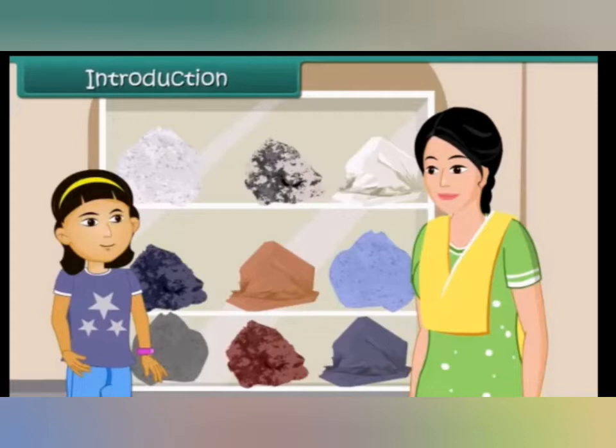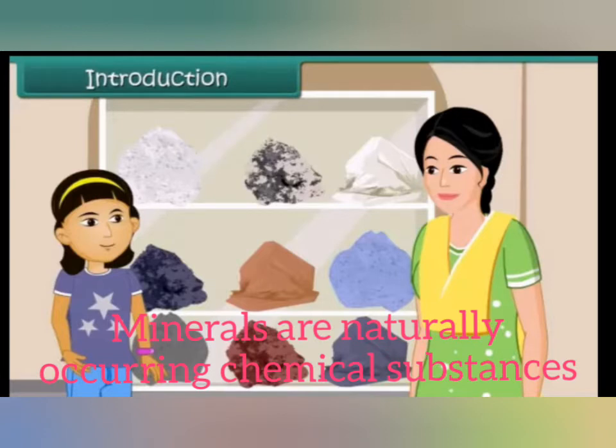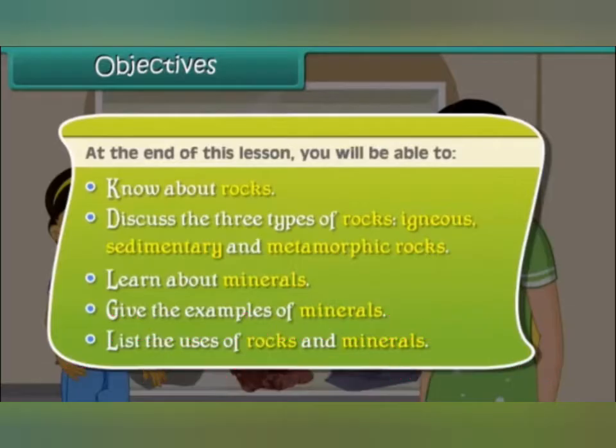Now what are these minerals? Minerals are naturally occurring chemical substances. Let us see the objectives of the lesson. At the end of the lesson you will be able to know about rocks. We are going to discuss about the three types of rocks — igneous, sedimentary and metamorphic rocks. We are also going to learn about minerals, examples of minerals, and uses of rocks and minerals.